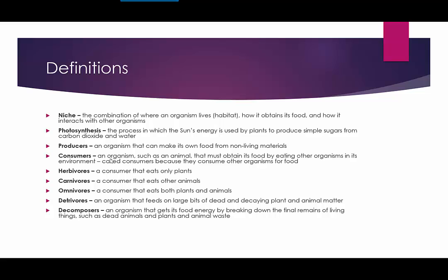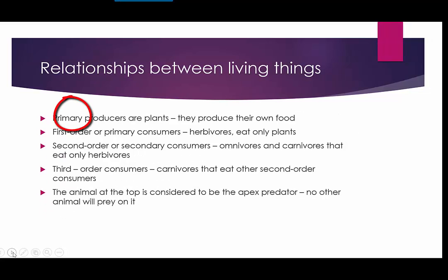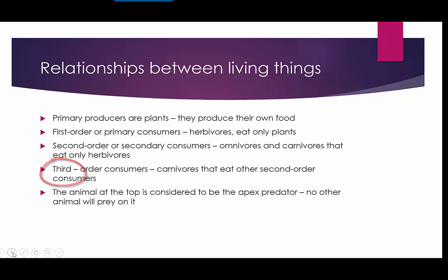An organism's role is also described according to what it eats: herbivores eat plants, carnivores eat meat, omnivores eat plants and meat, detritivores and decomposers eat dead or dying organisms. You can see all of those definitions on this page. Primary producers are plants, followed by primary, secondary, and tertiary consumers. Those at the very top are called apex predators — the predator that has no other animals that will hunt and eat it.